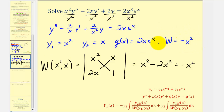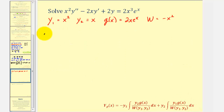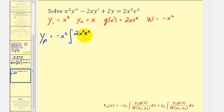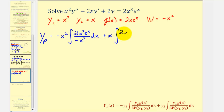Now we have all the information we need; we'll simply perform substitution for big y sub p. So we'll have big y sub p equals negative y sub one — that's negative x squared — times the integral of y sub two times g of x, which is x times two x e to the x, that's two x squared e to the x, divided by the Wronskian, which is negative x squared, dx. And then plus y sub two, or plus x, times the integral of y sub one times g of x, which is x squared times two x e to the x, that's two x cubed e to the x, divided by the Wronskian, dx.